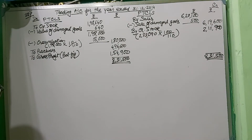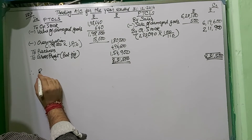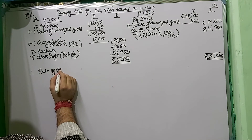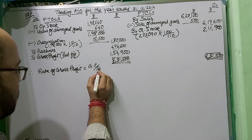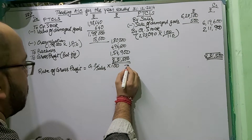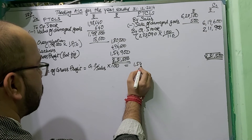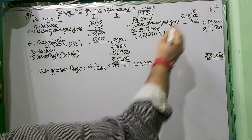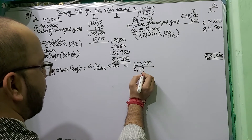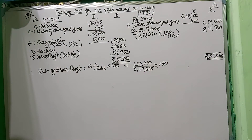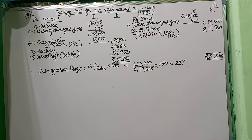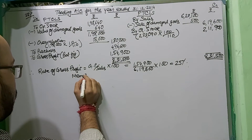Therefore, the rate of gross profit = GP / Sales × 100 = ₹1,54,900 / ₹6,19,600 × 100 = 25%. So when we calculate the memorandum trading account, the rate of GP to be applied will be 25%.